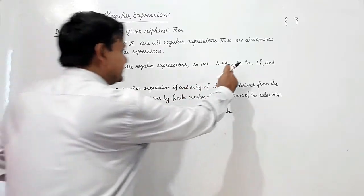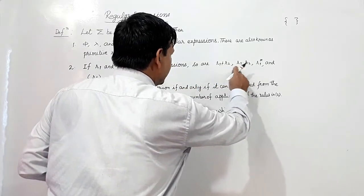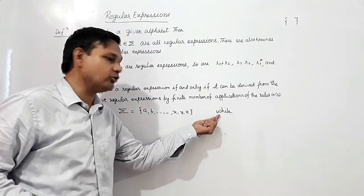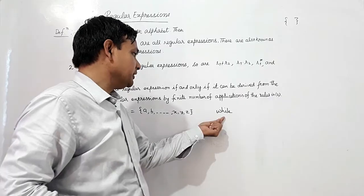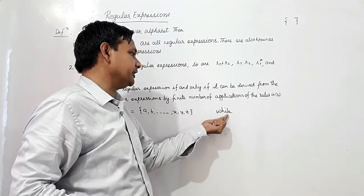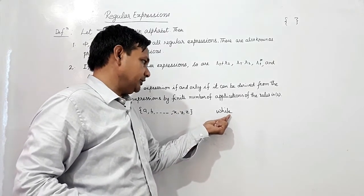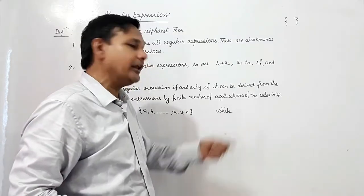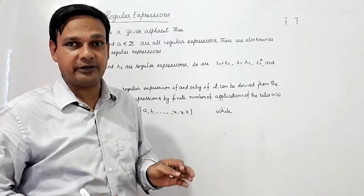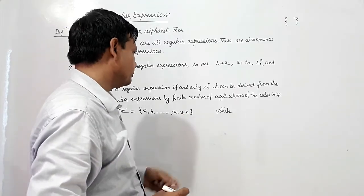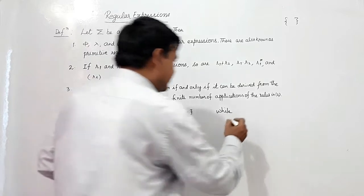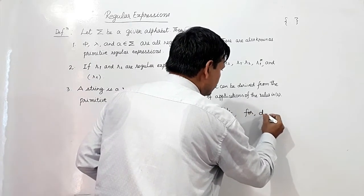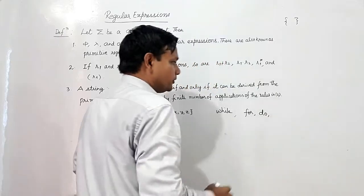Now applying rule number two — R1 concatenation with R2 — W is concatenated with H to form WH. Then WH is concatenated with I, then L is concatenated, then E is concatenated, giving us 'while'. So 'while' is also a regular expression.